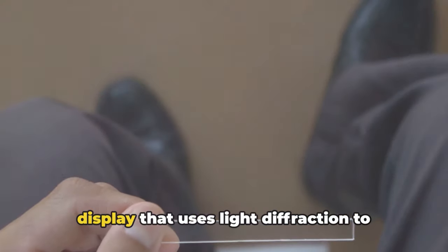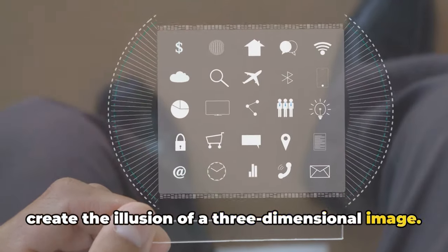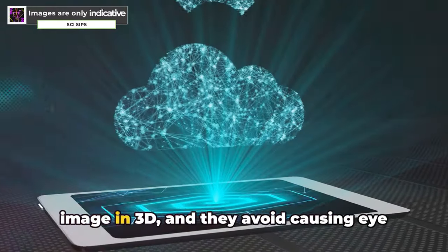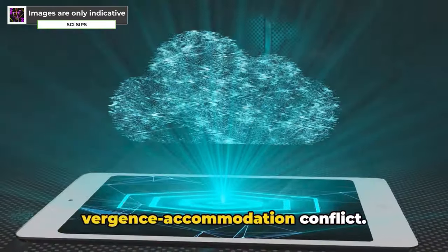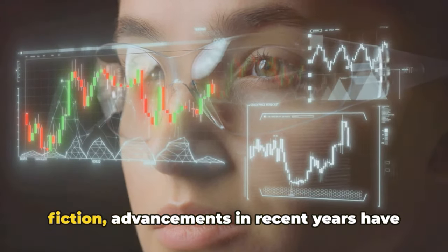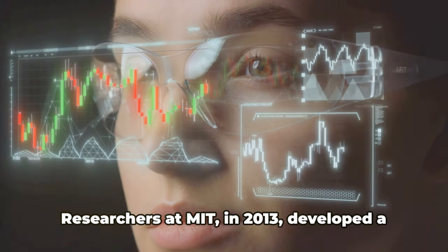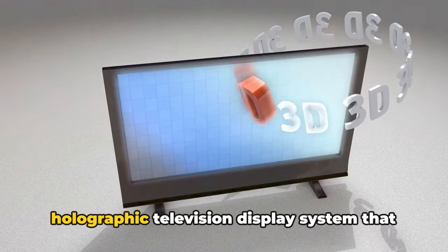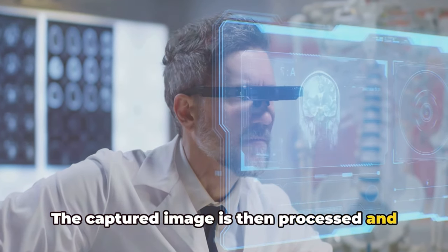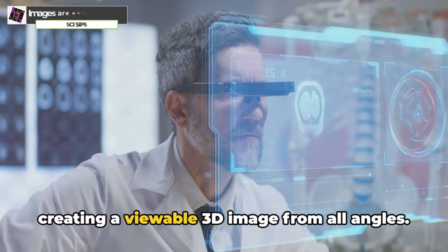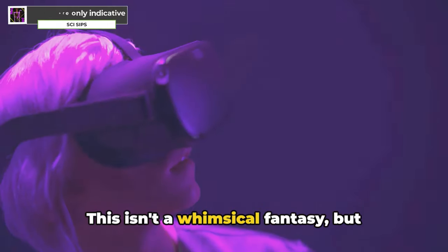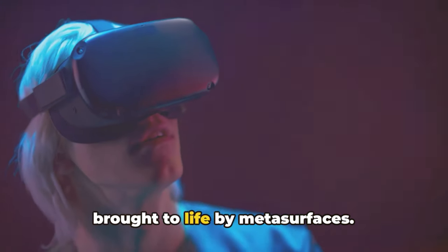Holographic displays are a type of 3D display that uses light diffraction to create the illusion of a three-dimensional image. Unlike other 3D displays, holographic displays don't require viewers to wear special glasses or equipment to see the image in 3D, and they avoid causing eye strain associated with vergence-accommodation conflict. While the concept of holographic displays might conjure up images of futuristic technology straight out of science fiction, advancements in recent years have brought them closer to reality. Researchers at MIT in 2013 developed a holographic television display system that used a Microsoft Kinect camera to capture 3D objects. The captured image is then processed and displayed using a series of laser diodes, creating a viewable 3D image from all angles. Companies like Real Fiction offer holographic display solutions for marketing and advertising at events and exhibitions. This isn't a whimsical fantasy, but rather the future of display technology brought to life by metasurfaces.